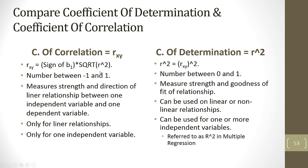Correlation is a number between minus 1 and 1 — it measures the strength and direction of the linear relationship between one independent variable and one dependent variable. Coefficient of determination R squared is a number between 0 and 1 — it measures the strength and goodness of fit. R squared can be used on a linear or nonlinear relationship, and it can be used for one or more independent variables. Little r squared is for simple linear regression with one independent variable; big R squared is for two or more independent variables. Correlation is only for linear relationships with one independent variable.